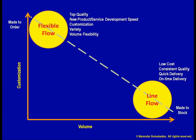Therefore, our final choice of process may not be at the extreme ends, but rather at a different point on the diagonal. Depending on how important each competitive priority is, we will need to balance the trade-offs by finding an appropriate position.